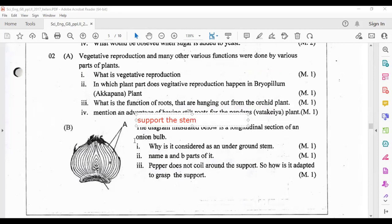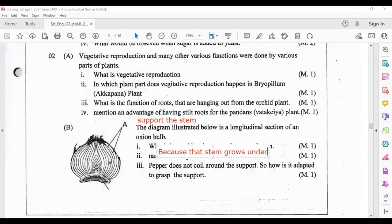The diagram illustrated below is a longitudinal section of an onion bulb. Why is it considered as an underground stem? The answer is because that stem grows under the ground.